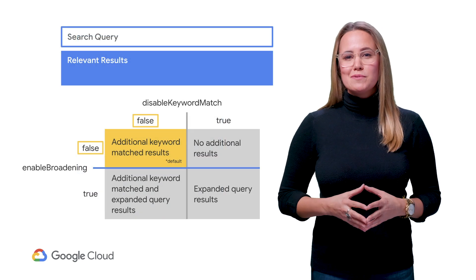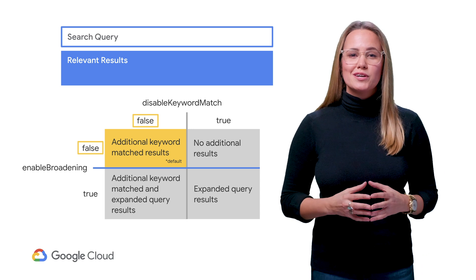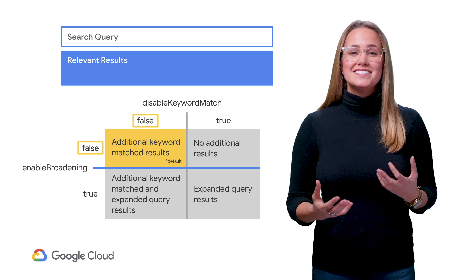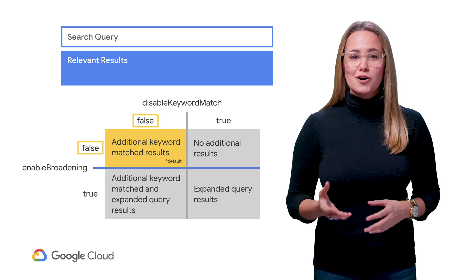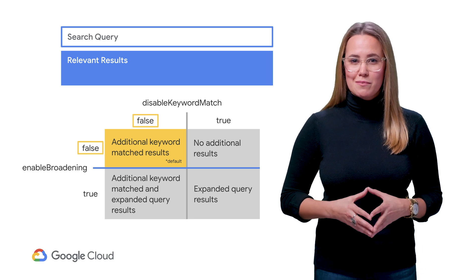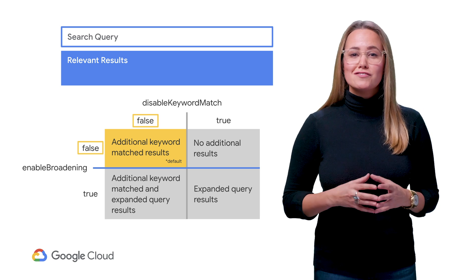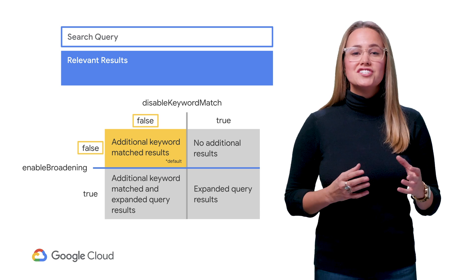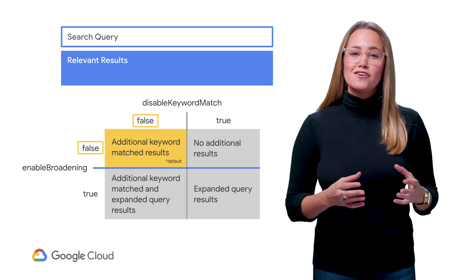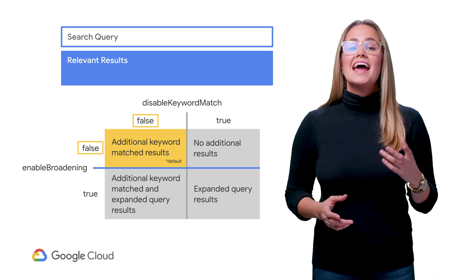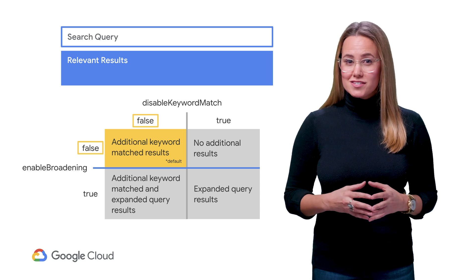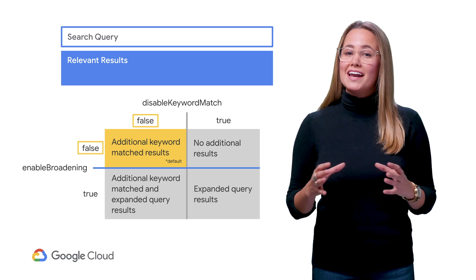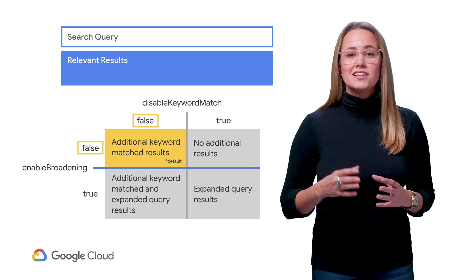Let's look at what happens when you use Enable Broadening and Disable Keyword Match together. This quick table gives a general idea of what users will see in a search result based on these parameters. The most relevant search results are always returned first. Without changing anything, a default search request has Enable Broadening and Disable Keyword Match set to false, which leads to the most relevant jobs being followed by any jobs that match the keyword search.